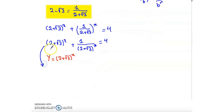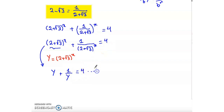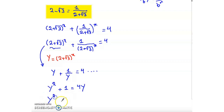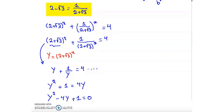Now y + 1/y = 4. Multiply both sides by y: y² + 1 = 4y. So y² − 4y + 1 = 0. Now we have a quadratic equation.